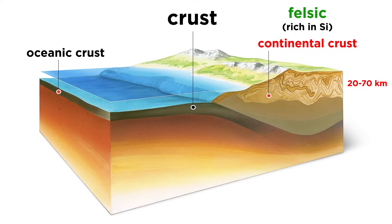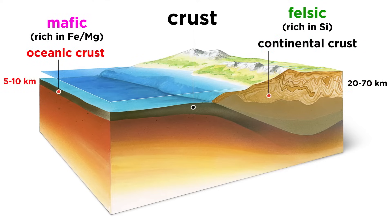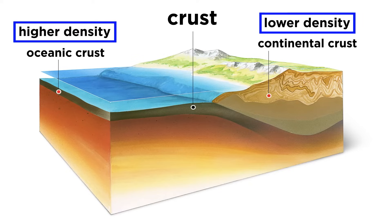Continental crust is felsic, or rich in silica, and is around 20 to 70 kilometers thick. Oceanic crust is mafic, or rich in iron and magnesium, and is around 5 to 10 kilometers thick. However, the most important difference between oceanic and continental crust is their density — oceanic crust is more dense than continental crust.